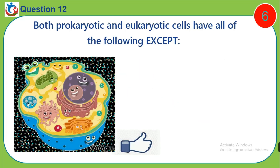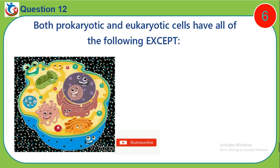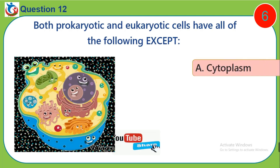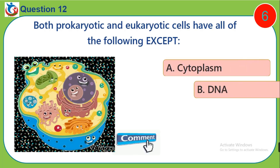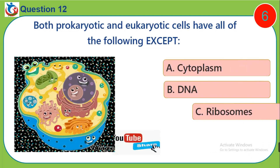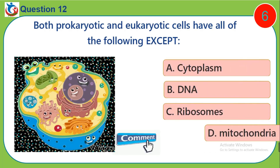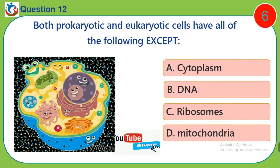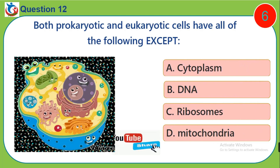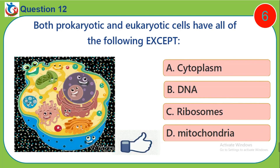Question 12. Both prokaryotic and eukaryotic cells have all of the following except: A. Cytoplasm. B. DNA. C. Ribosomes. D. Mitochondria.